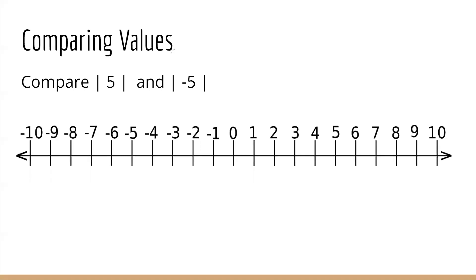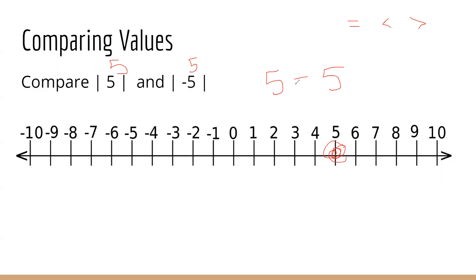I'm going to do one more problem with you — comparing the absolute value of 5 and the absolute value of negative 5. Before I use any symbol, both numbers must be simplified. The absolute value of 5 is 5. The absolute value of negative 5 is also 5. So the two numbers I'm looking at are five and five. Both of those numbers are at the same place, which means they are equal to each other. So my answer is five equals five.